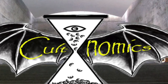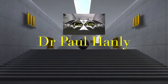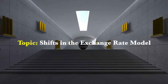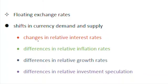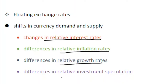Hi guys and welcome to Cultnomics, my name is Paul Hanley and today I'm going to be chatting to you about shifting the demand and supply curve for currencies. We're going to look at factors that can shift the demand and supply for exchange rates through a graph. The four factors we'll look at include changes in relative interest rates, relative inflation rates, growth rates or GDP, and differences in relative investment levels.